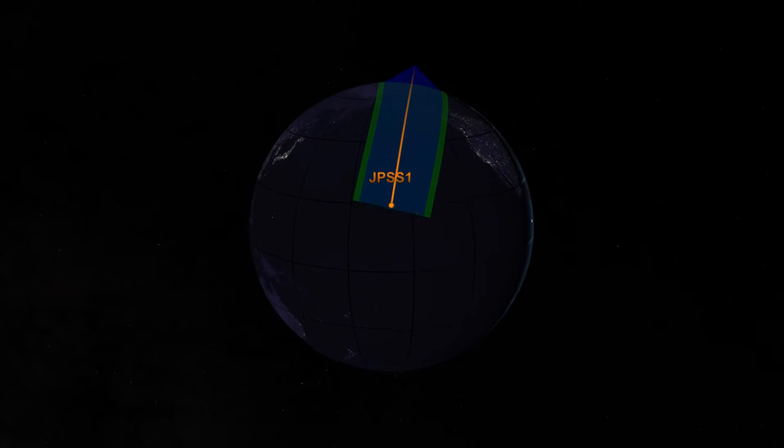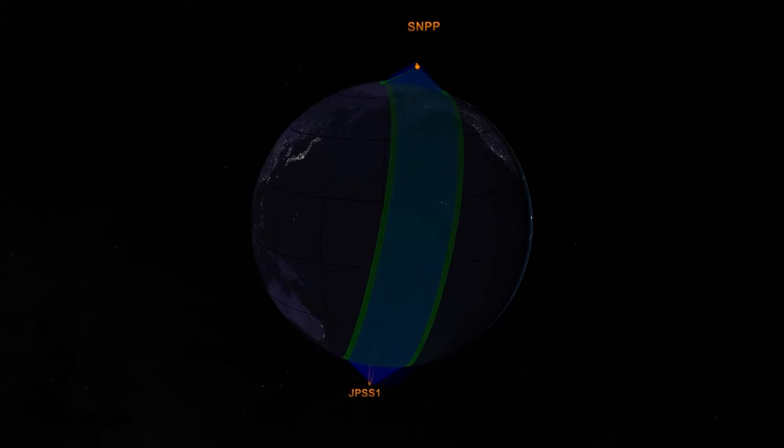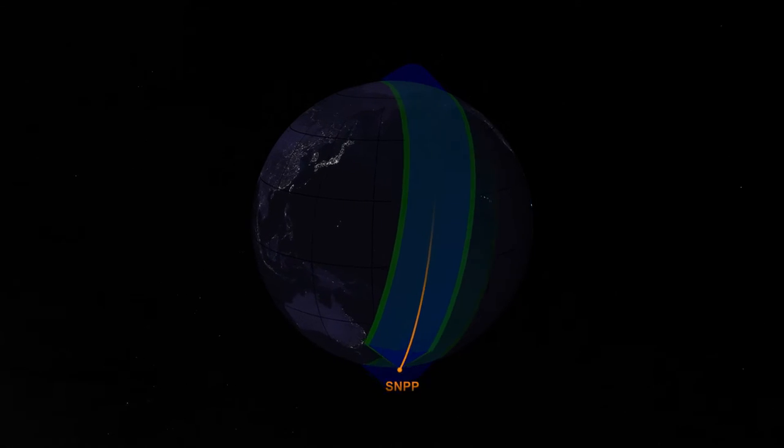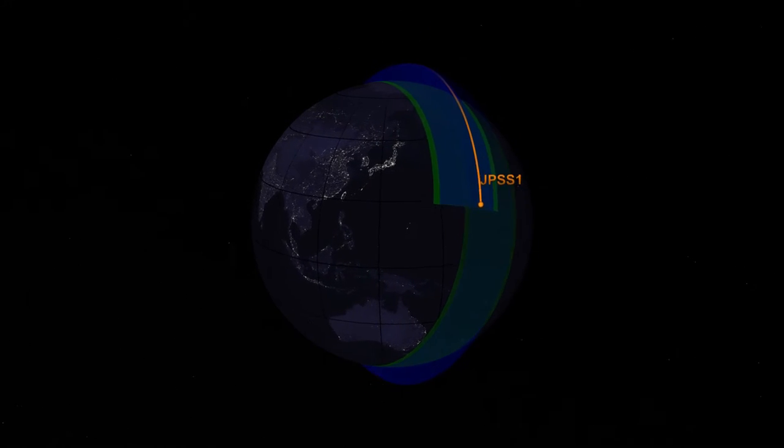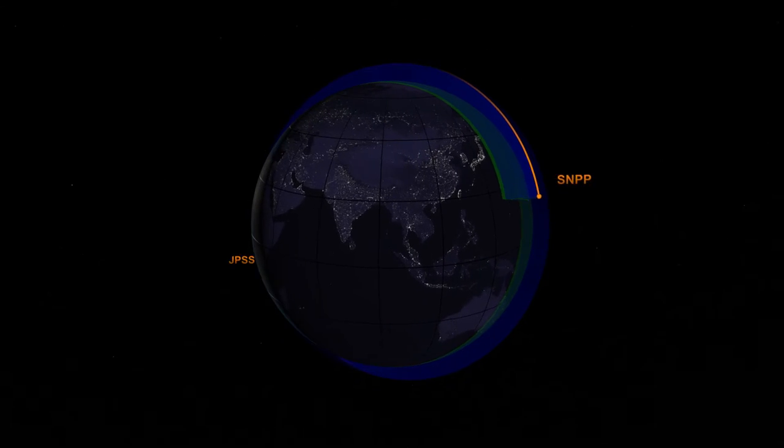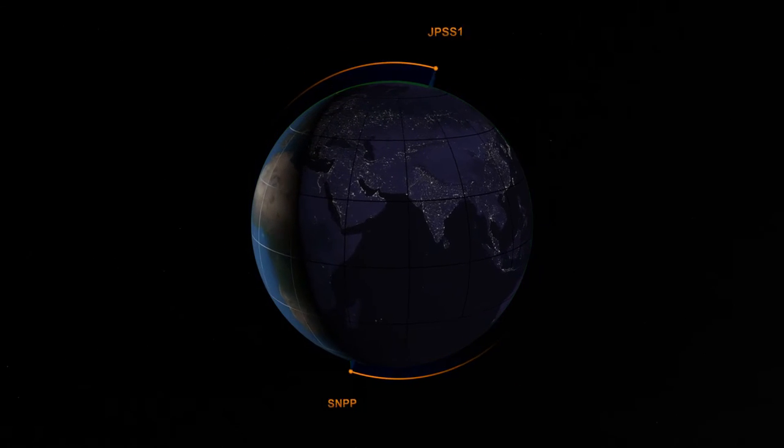As we zoom back out to include SNPP, we can see how these data swaths overlap, providing better coverage. Even though the satellites are in the same orbit, they will fly over slightly different regions as the Earth rotates below the satellites.